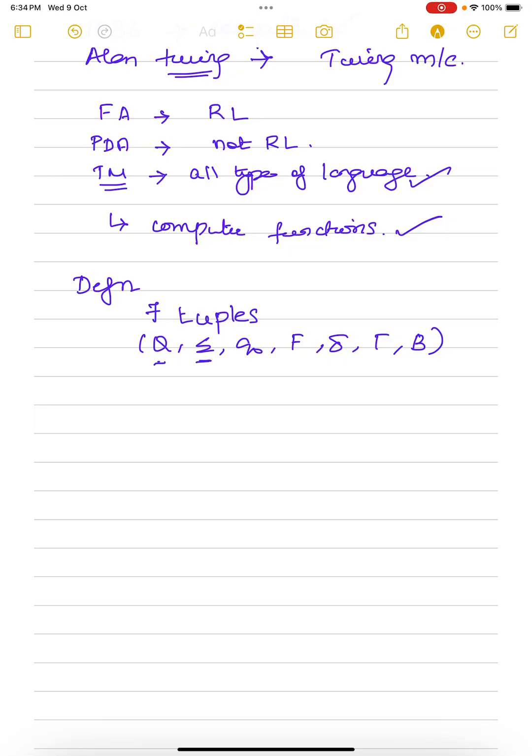Delta is the transition function. Gamma is the input tape symbols. And B refers to blank symbol.